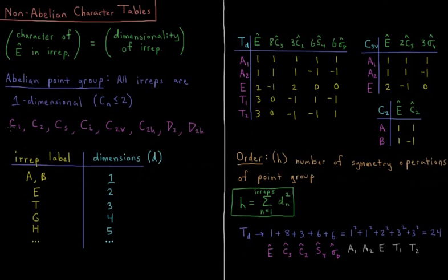Those are the only point groups where you'll see exclusively ones and minus ones with respect to the character of each irrep in each symmetry operation.